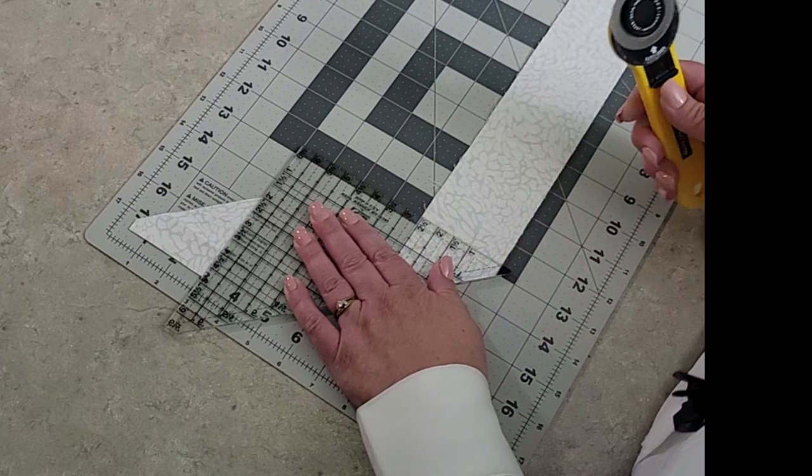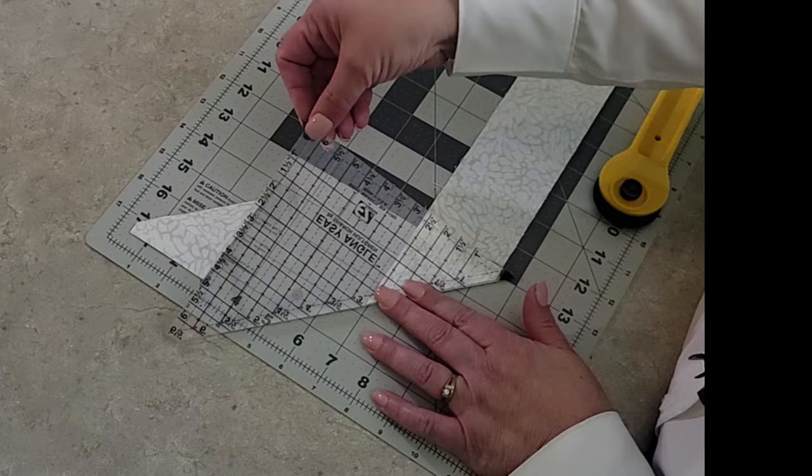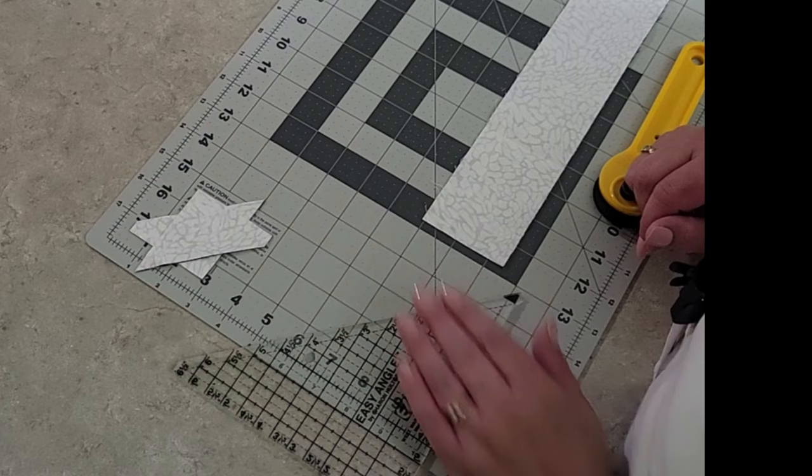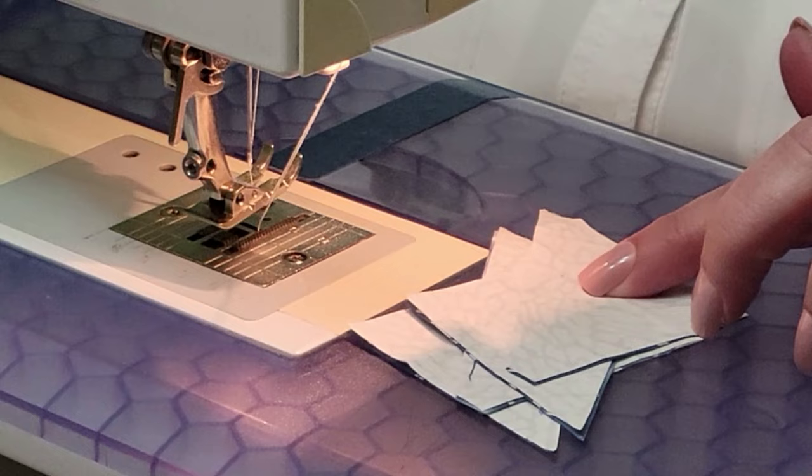Now I'll take my tool, my easy angle, and I'm going to flip it back again so that I'm ready to do the next one. I have this half square triangle ready to go. I'm going to add it to my pile to take to the sewing machine. Now that we have cut all of our half square triangles, we're sitting at the sewing machine and we're ready to begin sewing them together.